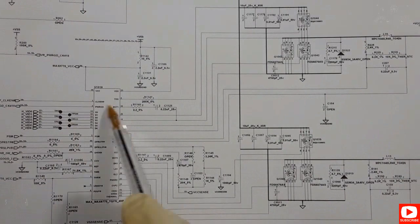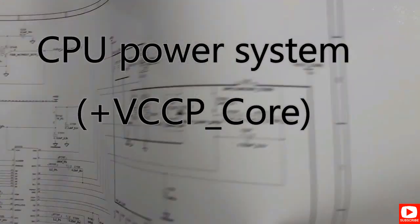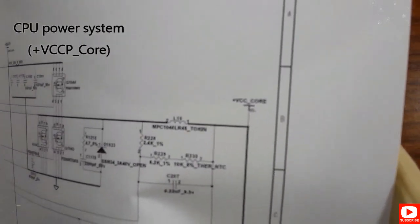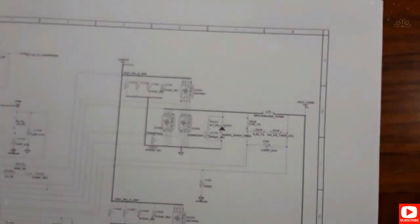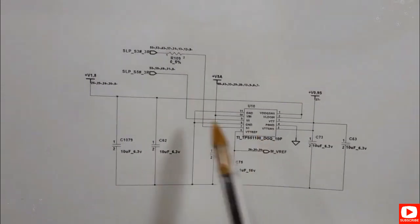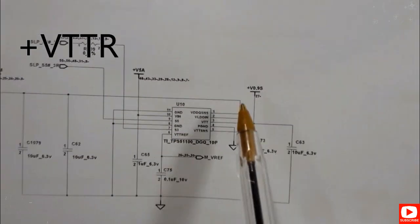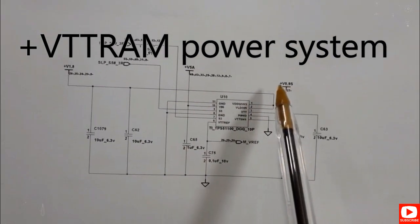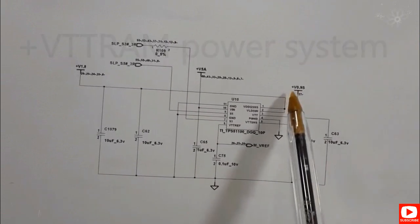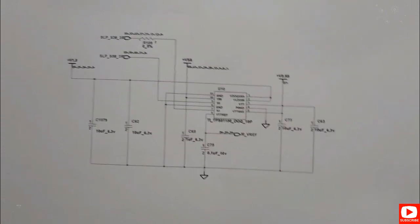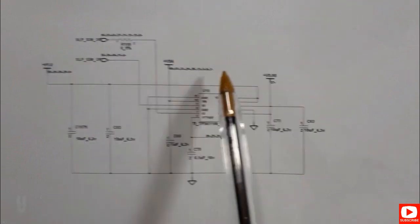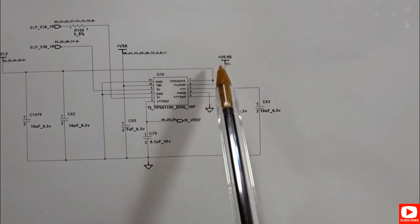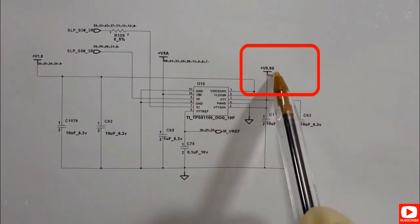Here we have the CPU power management IC. For the CPU, we have two channels. This power management IC is responsible for generating the plus VCC core, which is the main working power for the CPU. On page 11, there is another power management IC generating 1.8V and 0.9V. The 0.9V is the VTT — the RAM voltage termination. DDR2 RAM has two voltages: the main voltage of 1.8V and the VTT voltage of 0.9V.